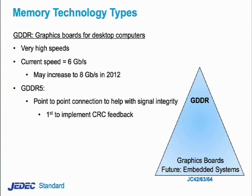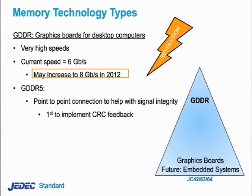GDDR is used mostly in graphics boards that go into desktop computers, but also being contemplated for embedded systems. Within JEDEC, the latest generation is GDDR5. Right now you can get GDDR5 memories running at about 6 gigabits per second. In the next year that will probably get pushed to 7, with some talk of maybe reaching 8. To reach that level of speed, there's an extensive amount of training sequences and power-on operations used to optimize the parametric interface between the controller and the DRAM.